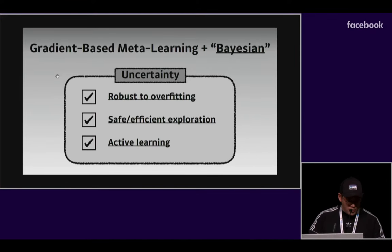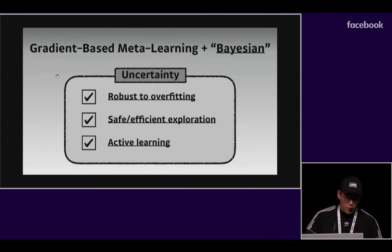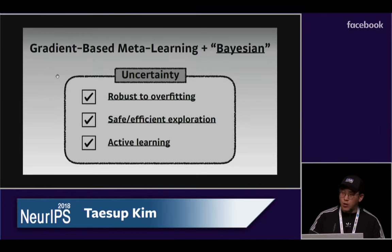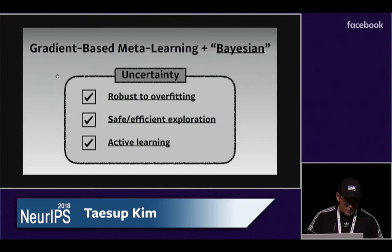Given these advantages of MAML, making a Bayesian version of gradient-based meta-learning is a critical contribution, particularly for the following reasons. First, it is well known that a critical limitation of existing methods is overfitting, due to its nature of fitting few-shot data to a large model. Also, by dealing with uncertainty, we can gain all the benefits of Bayesian learning, such as efficient exploration and active learning.